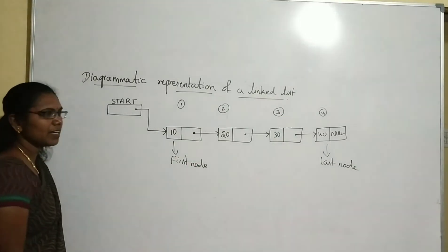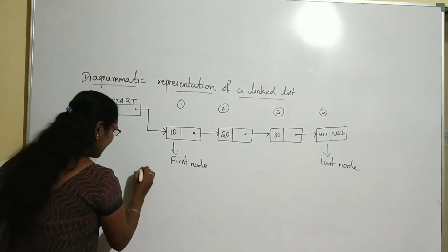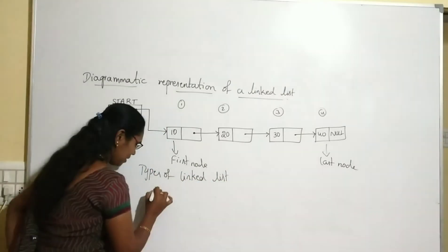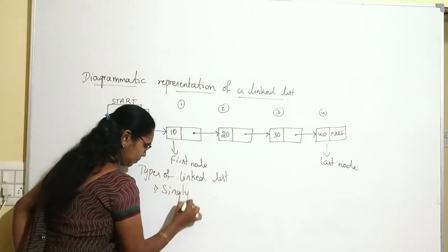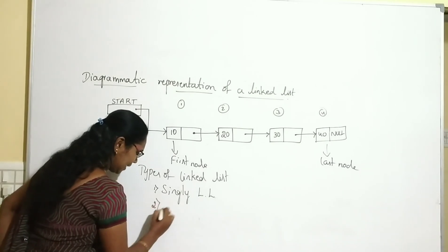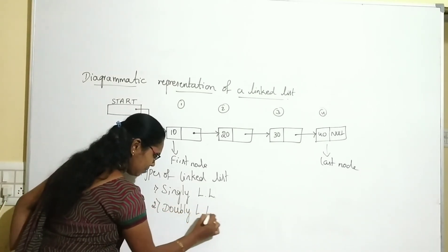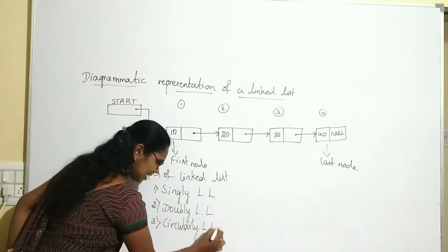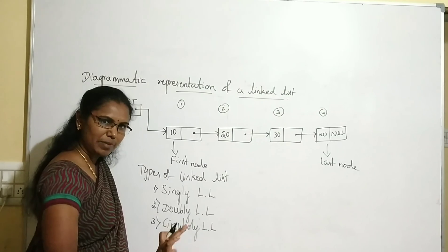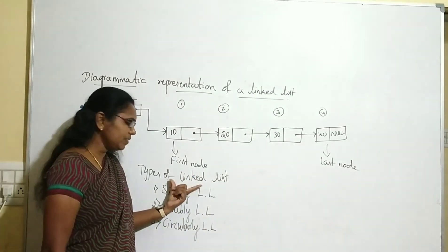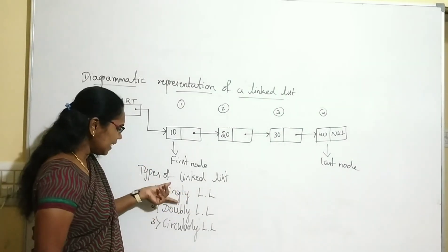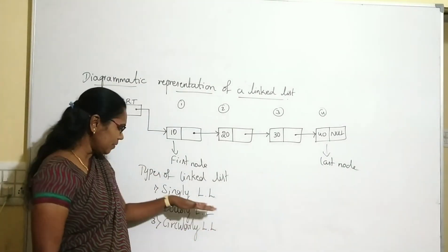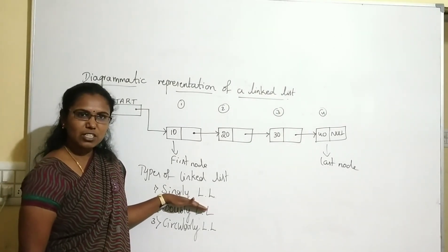This is about the diagrammatic representation of linked list. The next concept is types of linked list. The linked list is classified into three types: number one, singly linked list; number two, doubly linked list; number three, circularly linked list. Almost all algorithms we will implement using only the singly linked list concept, which we will discuss in the next class. Thank you so much.